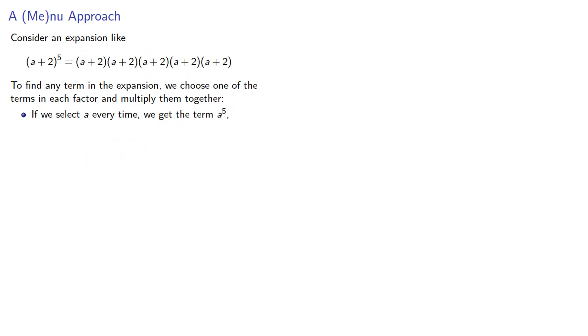If we select a every time, we get the term a⁵. If we select a, a, 2, a, and 2, we get 4a³.